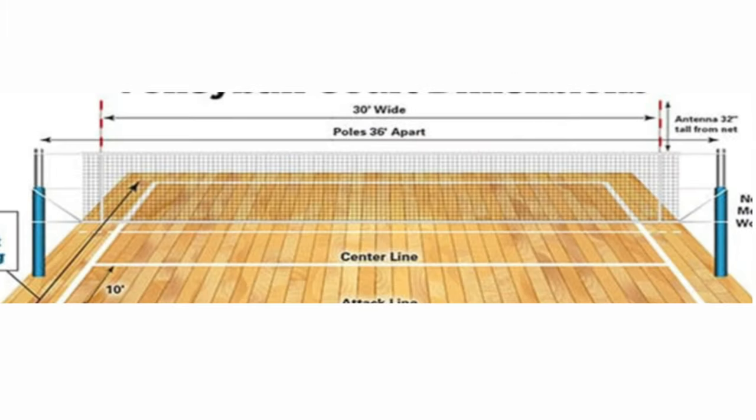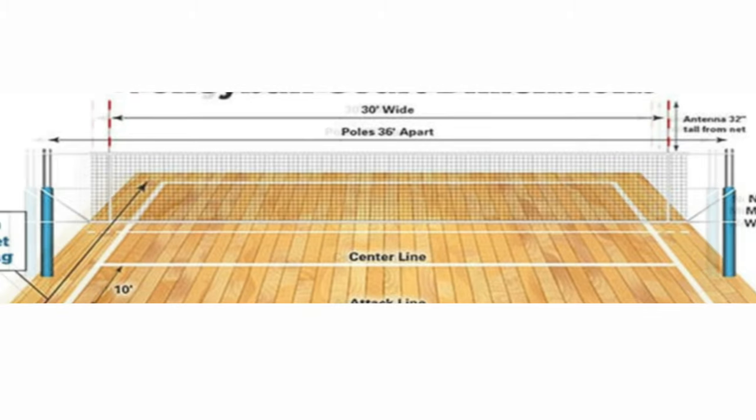The antennae are placed on each side of the net perpendicular to the side line, as a vertical extension of the side boundary of the court. A ball passing over the net must pass completely between the antennae, or their theoretical extension to the ceiling, without contacting them.